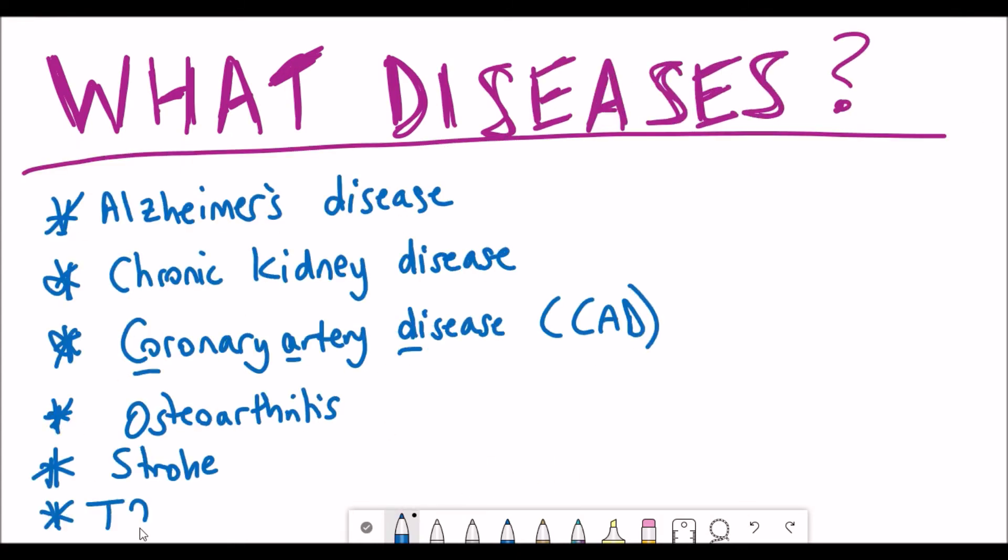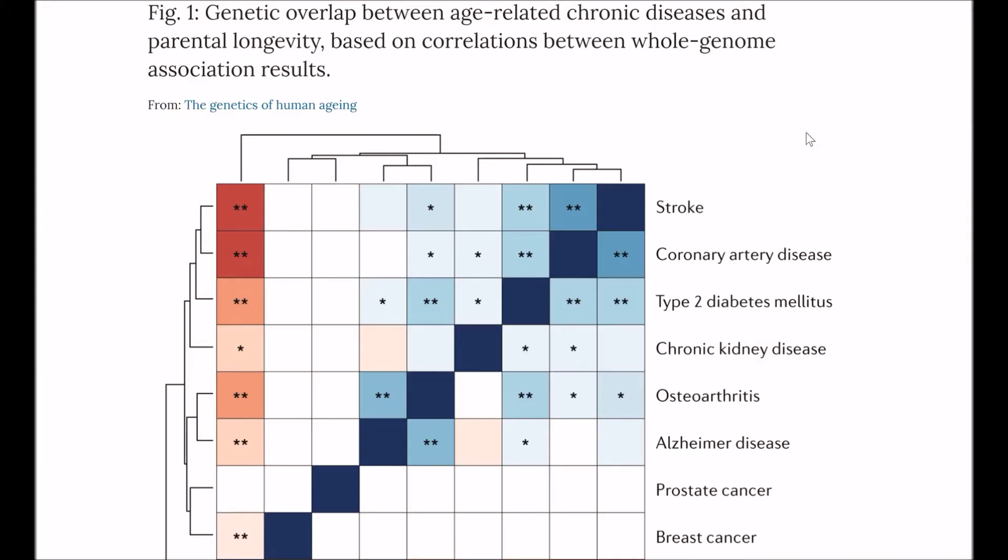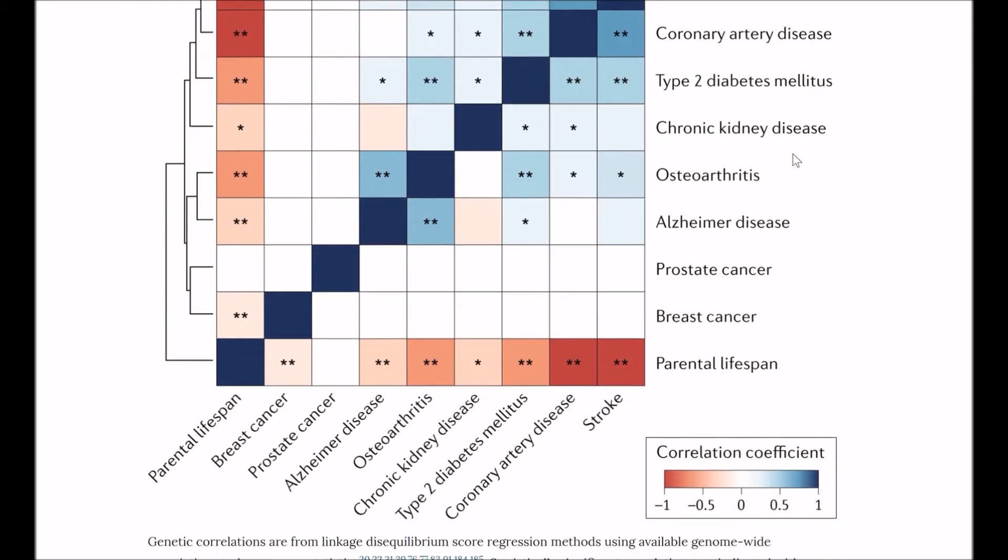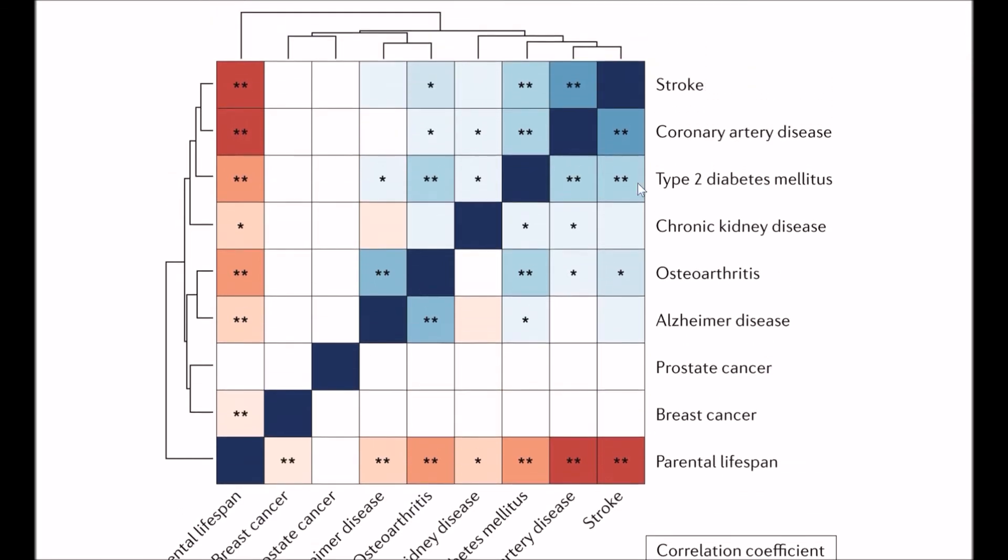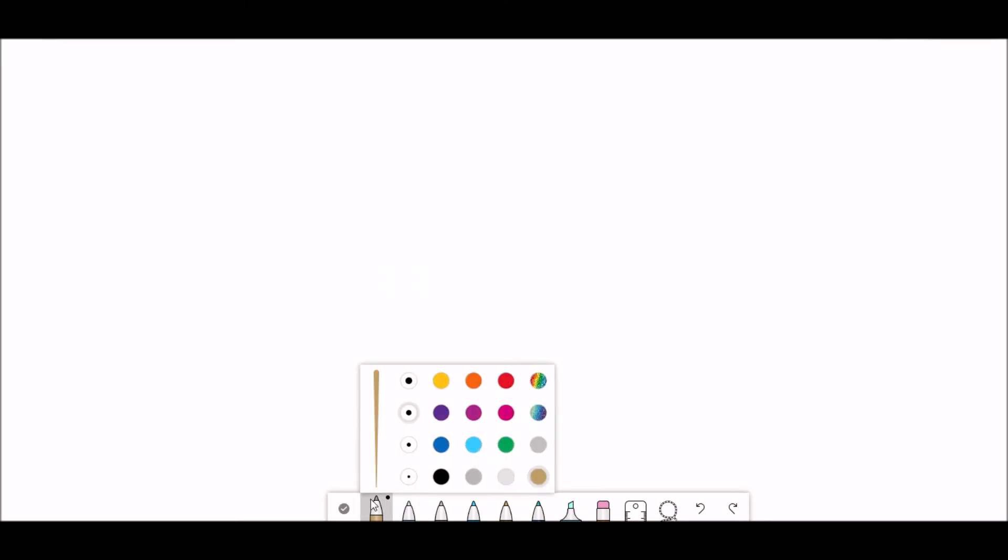So if we go back to this figure, we can see that coronary artery disease, osteoarthritis, type 2 diabetes, and stroke correlates negatively with parental longevity, but there isn't so much of an association between prostate cancer and breast cancer. So variants associated with different age-associated diseases are not necessarily important for all different age-associated diseases.